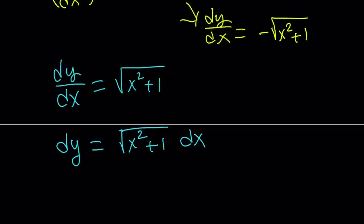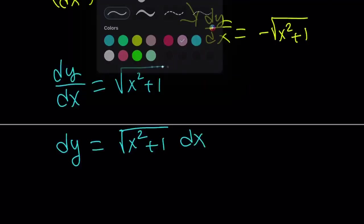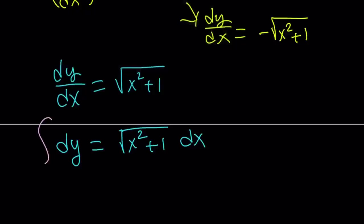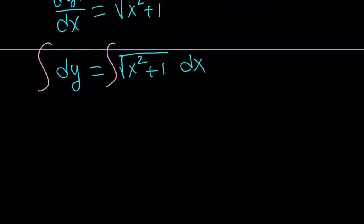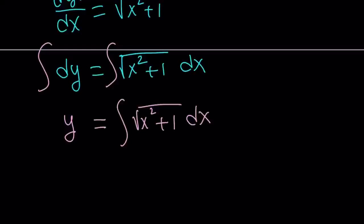Since this is a separable equation, it's very easy to solve. We're just going to go ahead and integrate both sides. The integral of dy with respect to y is going to be y. Not very straightforward on the right side, so we need to work on the integral of square root of x squared plus 1.